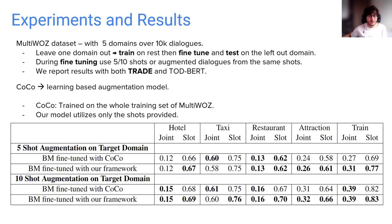Moreover, we compare our model against a learning-based augmentation model called COCO. COCO is simply trained on the whole training set of MultiWOZ, and thus we regard it as an upper bound, since our model only utilizes the few shots it is provided with, unlike the COCO model. We show that our model performs either same or better compared to COCO in again all domains of MultiWOZ.